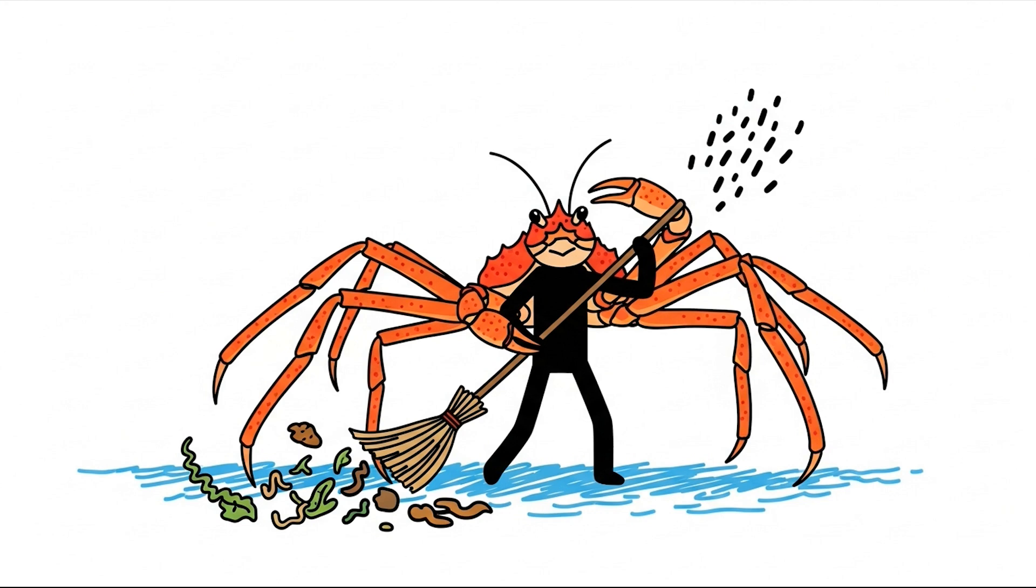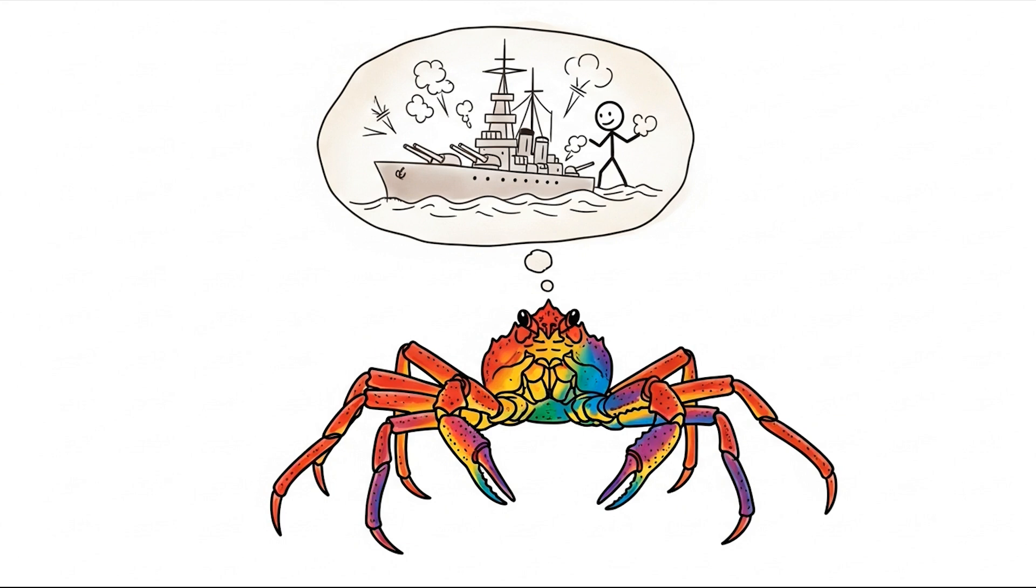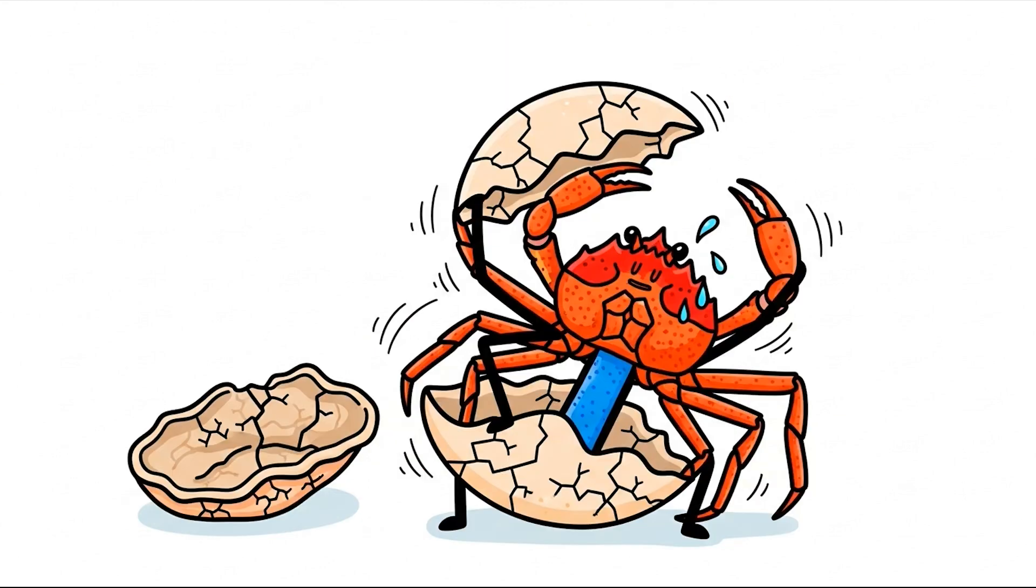Despite their somewhat terrifying appearance, these crabs are actually quite chill. They're more like underwater garbage trucks, diligently cleaning up dead organic matter from the ocean floor. These fascinating crustaceans can live for an extraordinary length of time, up to 100 years. There are spider crabs down there that were alive during World War II.